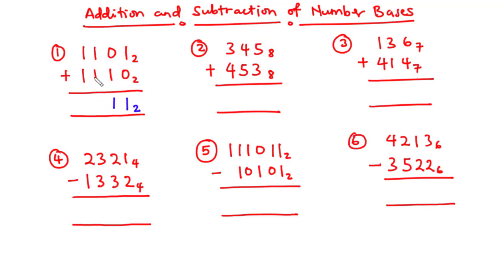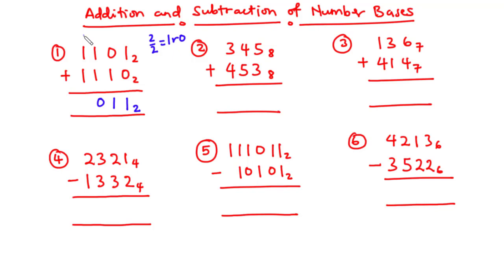Because we are working in base 2, if we get any value equal to or greater than 2 we can't write that value directly. We divide by base 2: 2 divided by 2 is 1 remainder 0. We write the remainder 0 here and carry the 1.